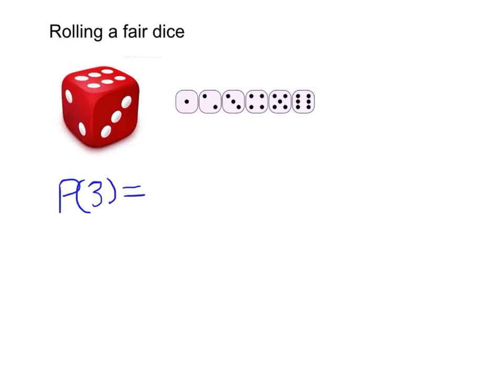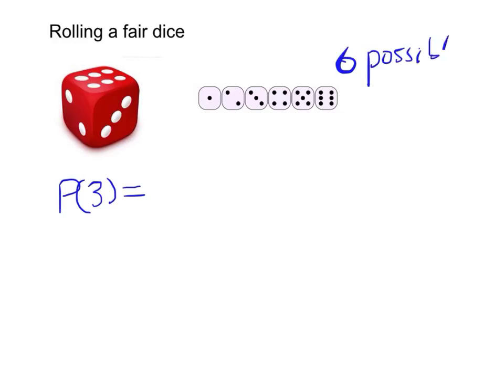And since we all know there are a total of six faces on the dice: 1, 2, 3, 4, 5, 6. There are a total of six possible outcomes. And actually the number three is only one of the six possible outcomes, one out of six.